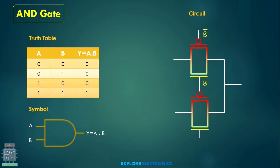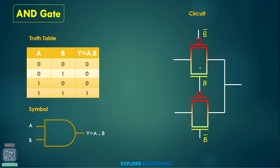The P transistor gate of the first transmission gate has B bar, and the second transmission gate P transistor gate has B while the N transistor gate has B bar. Taking one of the inputs as the control, I decide the pass value. The first transmission gate passes the value when B is equal to 1, and the second transmission gate passes the value when B is equal to 0, since the P transistor gate input is 0 and the N transistor gate input is 1.